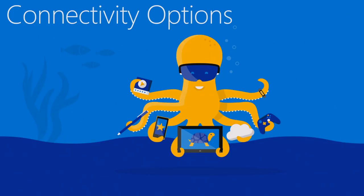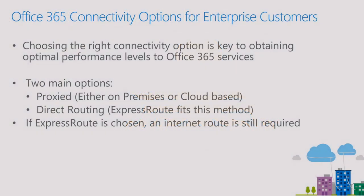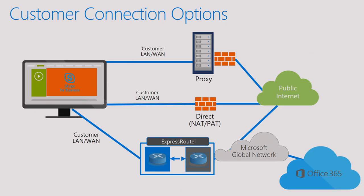From an enterprise perspective, how do we connect to Microsoft? There are a whole plethora of ways you can get your traffic out of your enterprise network, but if you boil them down they come to two options: proxied — going through a proxy — or direct routing, with Express Route falling under that model. There are two talks tomorrow around Express Route so I won't concentrate on it too much, but Express Route also requires an internet connection, so in that scenario you've actually got two connectivity methods going on.